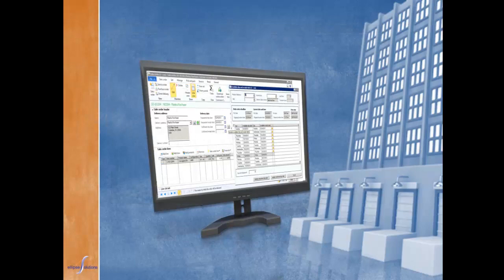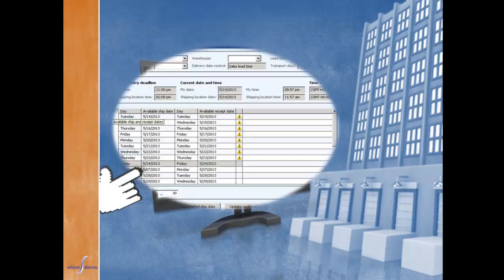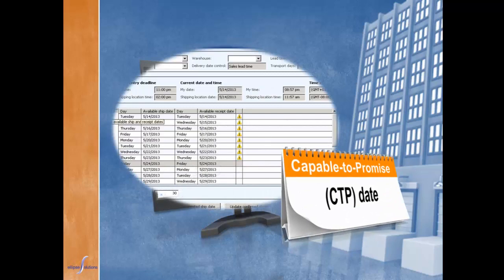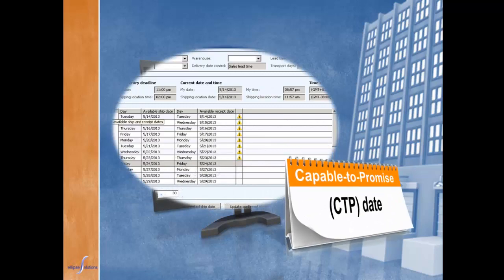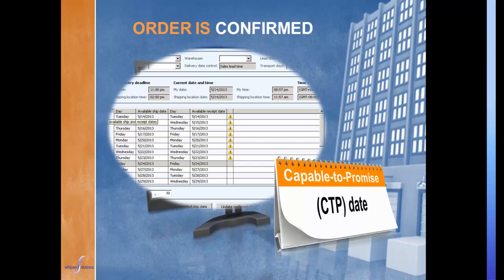For customer requests, your customer service rep takes advantage of the AX capable-to-promise functionality to check if the product is available or when it can be produced and delivered. Based on material and capacity availability, Ellipse Solutions AX for plastics system determines if your customer's requested delivery date can be met. The order is confirmed and AX notifies your customer her order is set for the date requested.